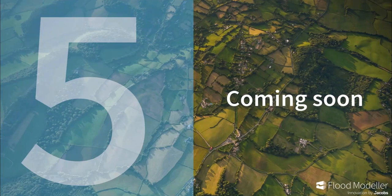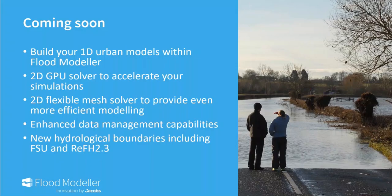Thanks Bob — that was an excellent introduction to the new features within FloodModeler version 5. I now have the opportunity to share a few of the things we're already working on for future releases including version 5.1, due for release early next year. First on the list is the full 1D urban build capability — you can currently load, edit, run, and view 1D urban models and link these to the 1D river and 2D solvers, but you can't currently build these models from scratch. These capabilities didn't quite make it into this release but will be present in 5.1. Next is the FloodModeler 2D GPU solver, which will enable you to accelerate simulations using GPU technology — also available as part of 5.1. Other features include a new flexible mesh 2D solver allowing more efficient modeling particularly within urban areas.